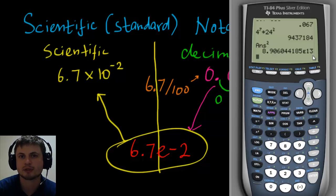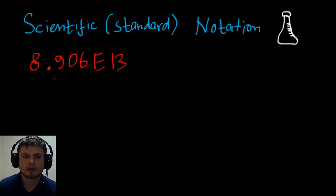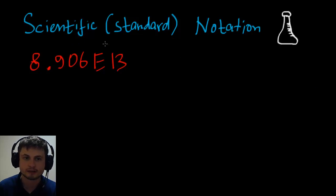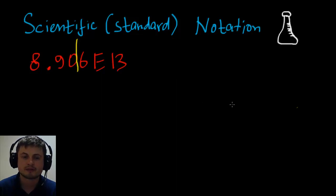That's the number we got from our calculator — ignoring some of the smaller decimals. In math and IB tests, it doesn't really matter how many decimal places you have, though in certain sciences they may prefer only two decimal places in scientific notation. Let's translate this number into both scientific and decimal form.